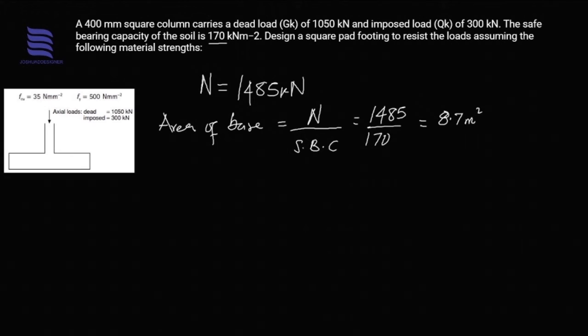This is the required area. To provide the base area now, we need to find the respective length for the size of the square footing. We have the square root of 8.7, which gives us 2.9 meters.